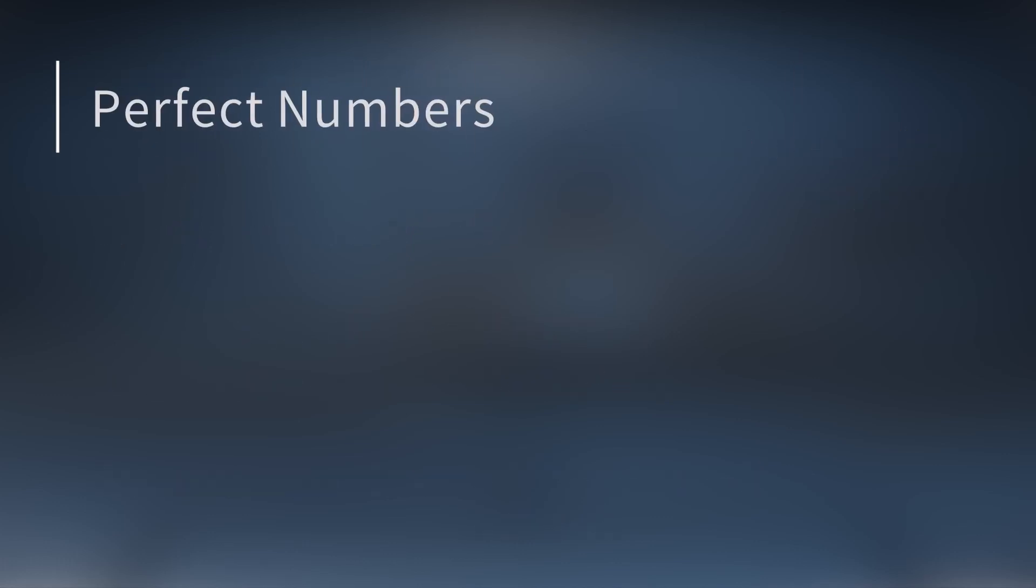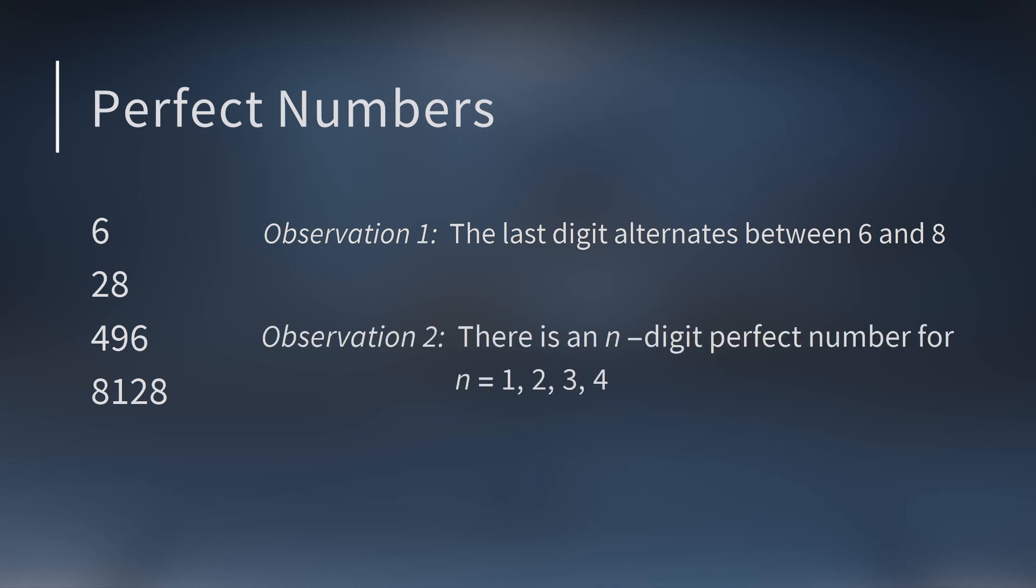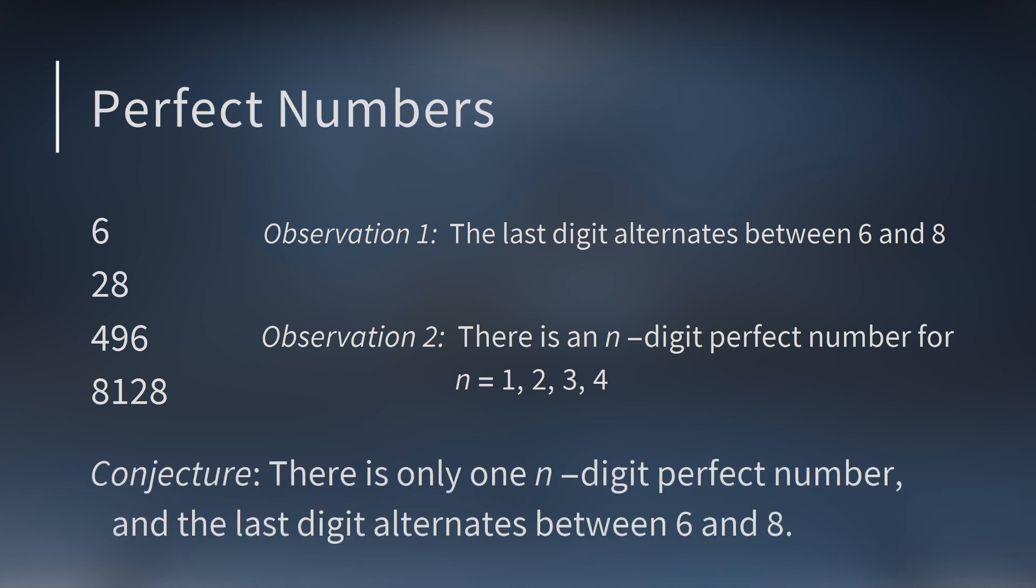That leaves the perfect numbers. We know 6 is perfect and 28 is perfect. And the next two perfect numbers are 496 and 8,128. Those were the only perfect numbers known thousands of years ago. They did notice the last digits of these perfect numbers alternated between 6, 8, 6, 8. Also of these four, the first one has one digit, the next one has two digits, the third has three digits, and the fourth has four digits. So they thought that was the pattern, that for any number of digits, there was one and only one perfect number, and the last digit alternates between 6 and 8.